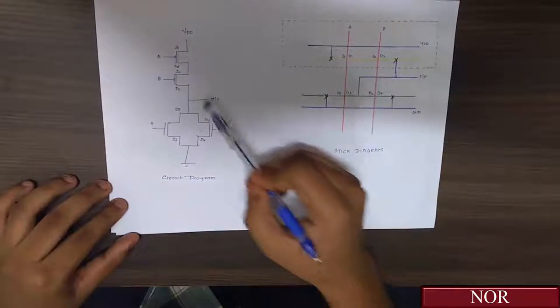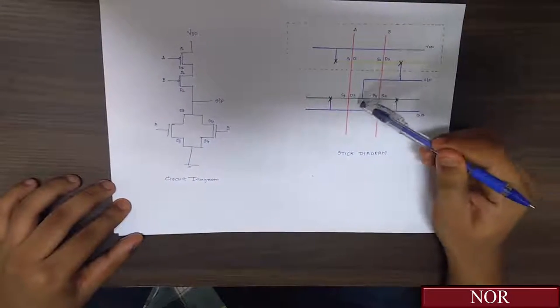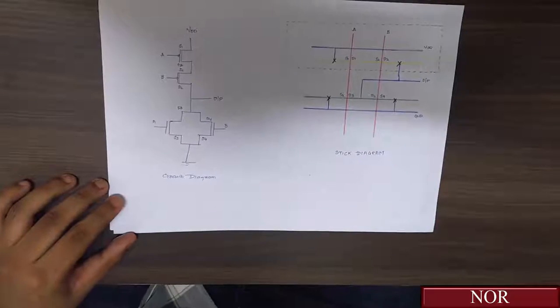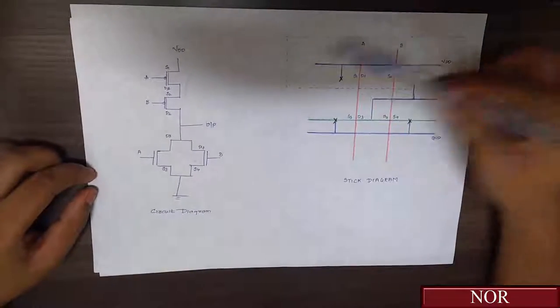The output is obtained at D2 and D3. So D2 and D3 are combined to give the output. The dotted line here represents the N-well.